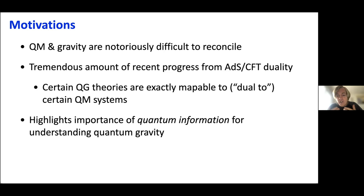You can immediately see why this duality would be tremendously powerful if we are trying to learn about quantum gravity, because we have these quantum gravity theories that maybe we don't fully understand all the details of. And somehow these theories are exactly mappable to quantum mechanical systems which, in principle, we know how quantum mechanics works. One thing I'll hopefully convince you of in this tutorial is that this duality really highlights the importance of quantum information for understanding quantum gravity.